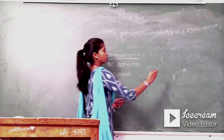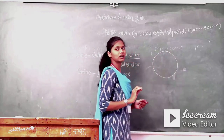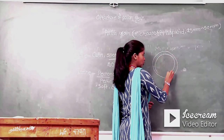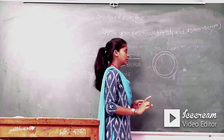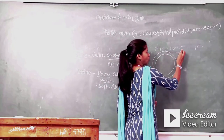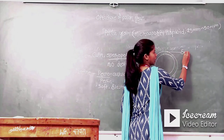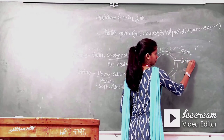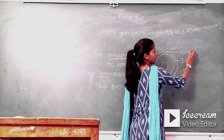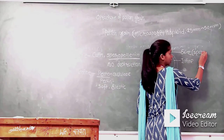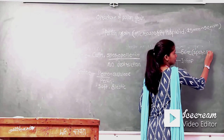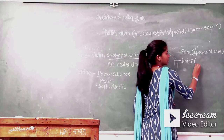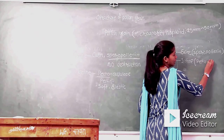Suppose this is the pollen grain. Mostly pollen grains are circular, but size and shape vary from plant to plant. Pollen grain has two layers: the outer layer is known as exine and the inner layer is known as intine. Exine is made up of sporopollenin, which is very resistant and cannot be degraded. Intine is made up of pectocellulose.